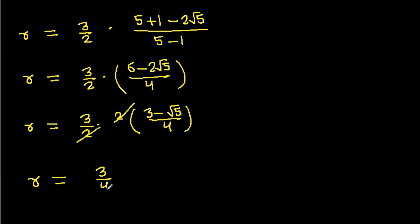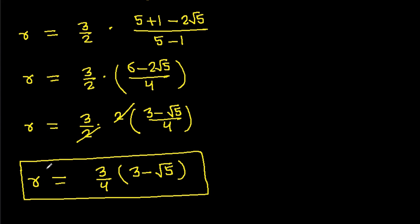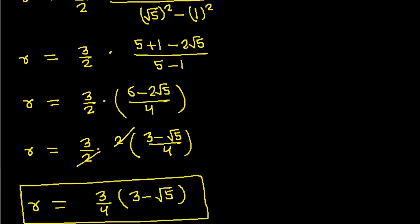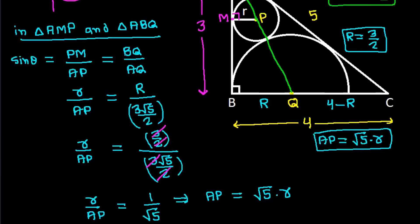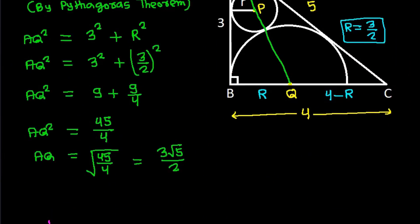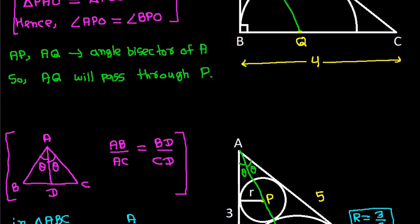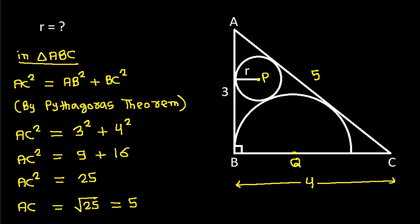So the radius of the circle is 3 over 4 times 3 minus root 5. Thank you.